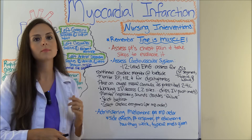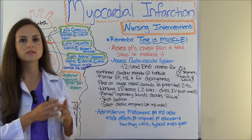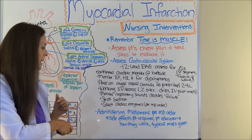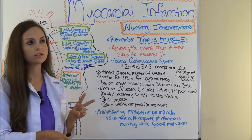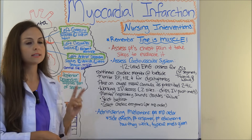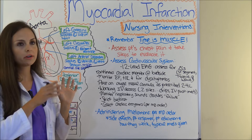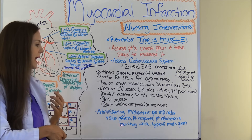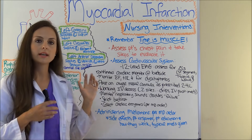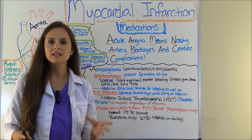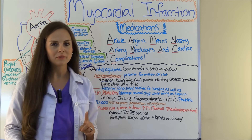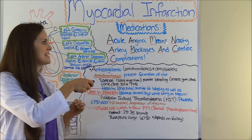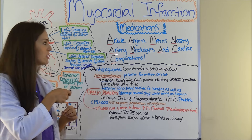A big part of our job is administering medications that the doctor has ordered. As a nurse, you want to be familiar with the side effects of the medications, how the patient should respond, patient education, how they work on the body, and the typical medications given for an MI. To help you remember the categories of drugs, use this mnemonic: Acute Angina Means Nasty Artery Blockages And Cardiac Complications.